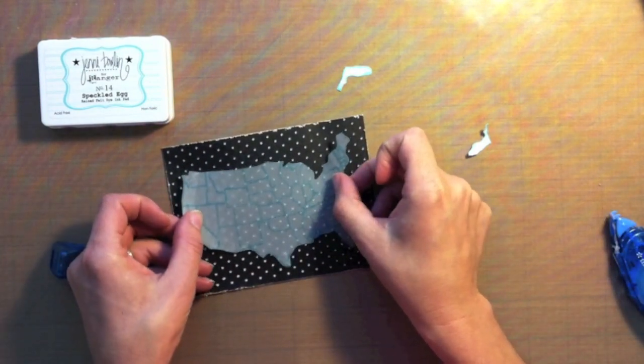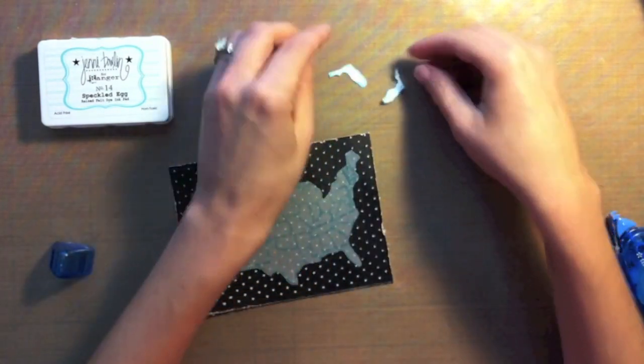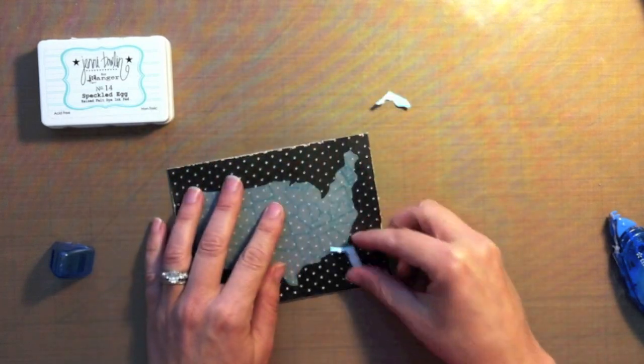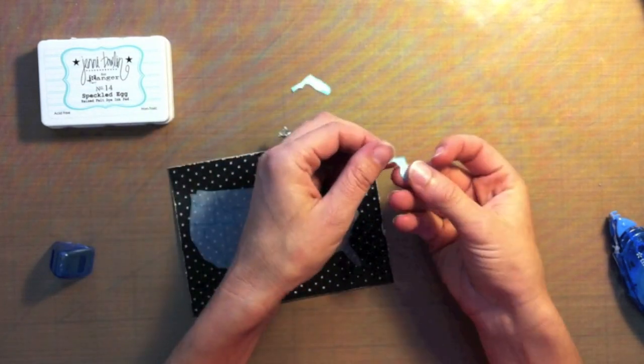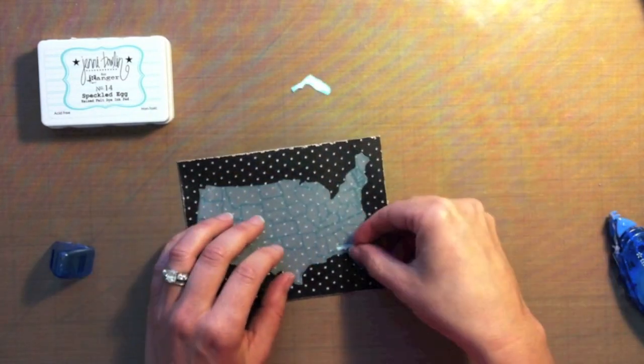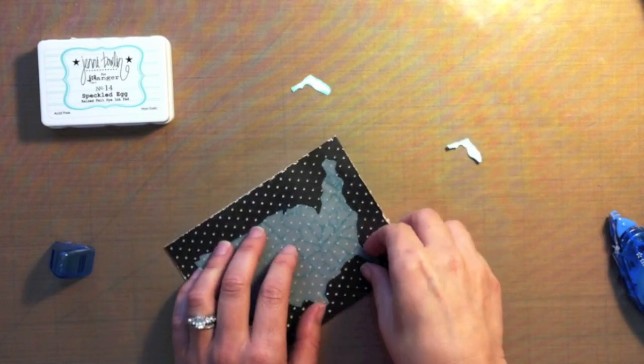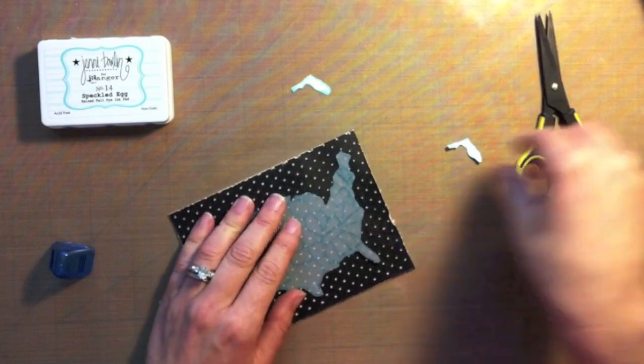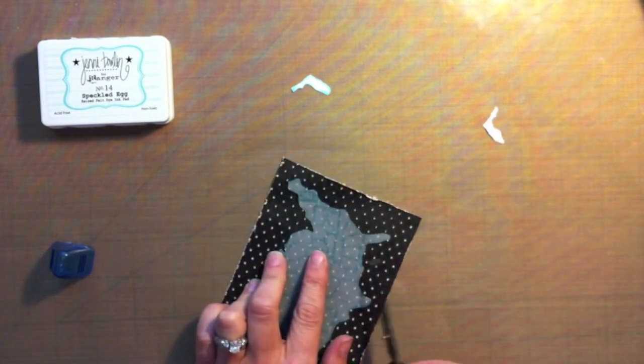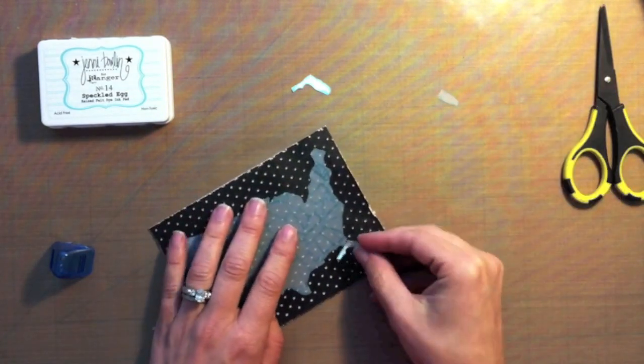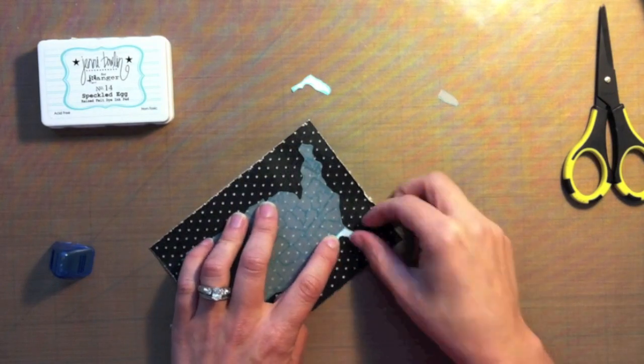I'm just going to adhere it right to that panel because I really loved how those embossed dots shine through. I'd also stamped the map a second time and cut out Florida because that's where I live. And I'm going to put it right there over Florida just to accent. But hey, I'm in Florida so I'm going to put that down with some Tombow Multi.